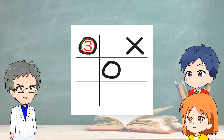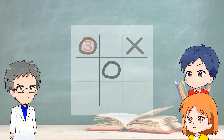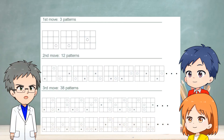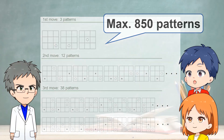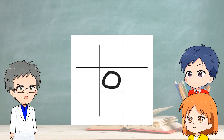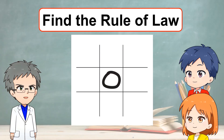The opponent has various options for the fourth move. Shall we think of all the possibilities? There are so many different moves. If you consider each move, you need to make rules for up to 850 patterns. Even with a simple tic-tac-toe game, if you divide all of the moves, there are a whole lot. In this situation, it's important to find the rule of law — the rules for winning.